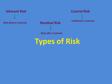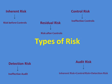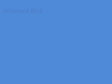Control risk is basically ineffective controls — though controls are in place, they are not effective. We also have detection risk, which speaks about ineffective audit. Then we have audit risk, which is the sum total of inherent risk, control risk, and detection risk. We will discuss all these risks in detail in our next slide.